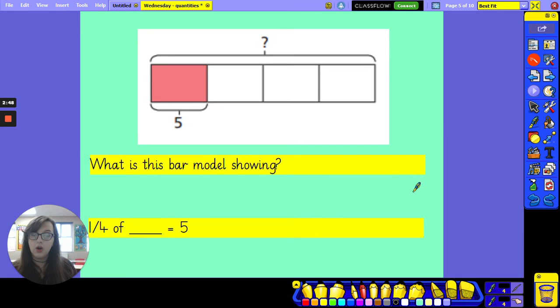Let's have another go. Pause the screen and see if you can have a go at this one yourself. We've got four parts, so quarters, and one is worth five. If one quarter is five, how much is it worth altogether? Okay, I hope you've had a go. If you haven't, press pause and have a go now.